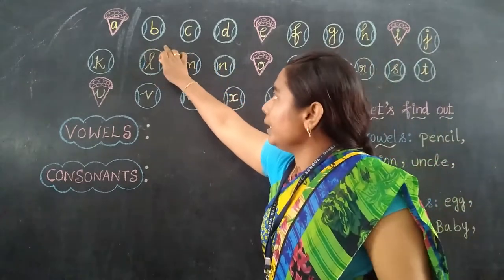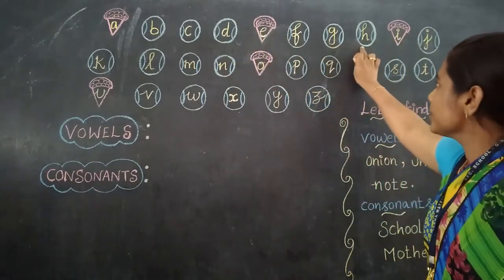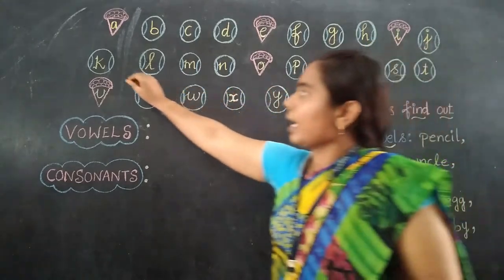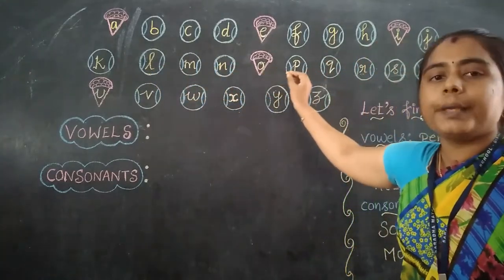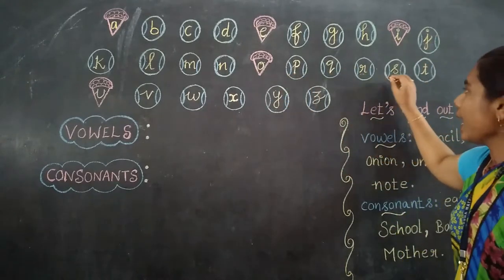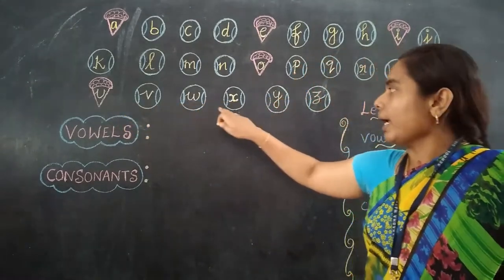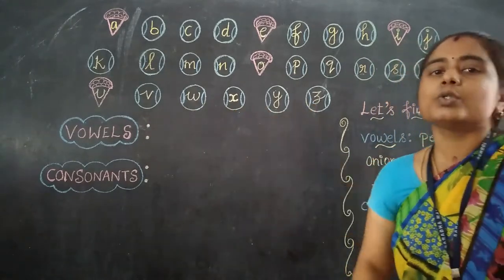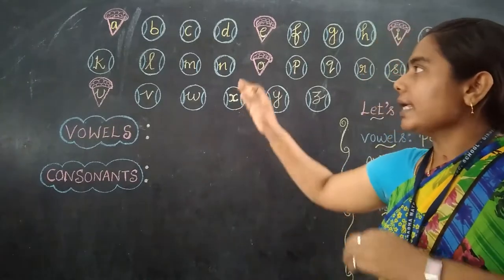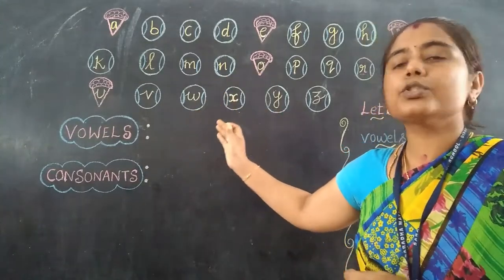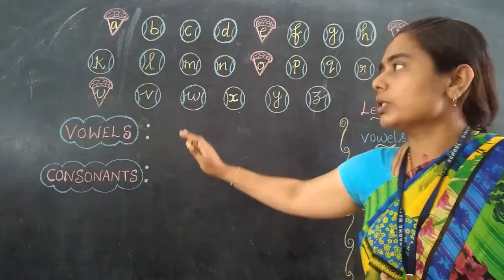A, B, C, D, E, F, G, H, I, J, K, L, M, N, O, P, Q, R, S, T, U, V, W, X, Y, Z. So these are all the 26 alphabets we have in English. After learning these, we are able to learn the vowels and consonants. You should be aware of these alphabets first.